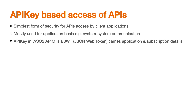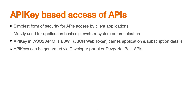The API key in WSO2 API Manager is a JWT — a JSON Web Token — which carries application and subscription details. It is basically independent of the user and mostly dependent upon the application. These can be generated via the developer portal or the developer portal REST APIs, on a per-application basis. Each application needs to subscribe to a particular API, and there will be a separate API key per application.